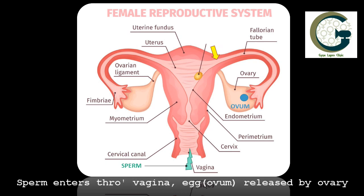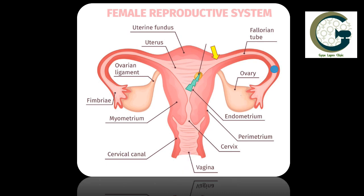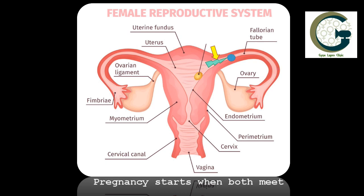Normally during the process of intercourse the sperm enters through the vagina and the egg or the ovum is released by the ovary. The ovum then travels through the fallopian tube and the sperm travels through the uterus until finally both of them meet inside the fallopian tube at a point somewhere close to the tubal ostium.